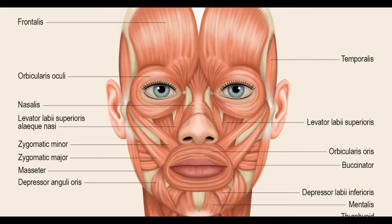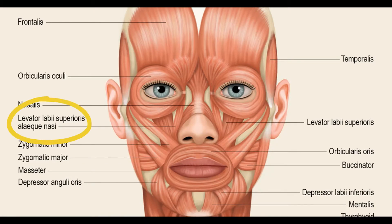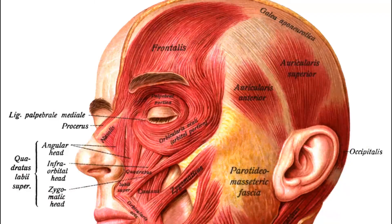You've got three muscles in this region: you've got the nasalis, also known as the compressor naris; you've also got the levator labii superioris alaeque nasi; and the procerus.